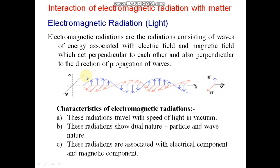Welcome to Interaction of Electromagnetic Radiation with Matter. What is Electromagnetic Radiation? Electromagnetic radiations are the radiations consisting of waves of energy associated with electric field and magnetic field which act perpendicular to each other and also perpendicular to the direction of propagation of waves.